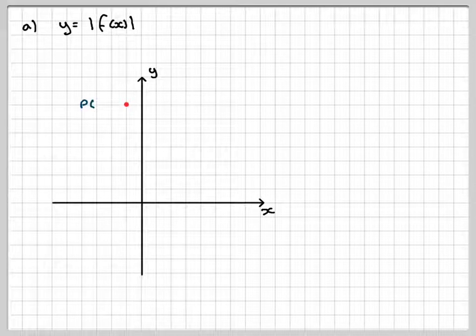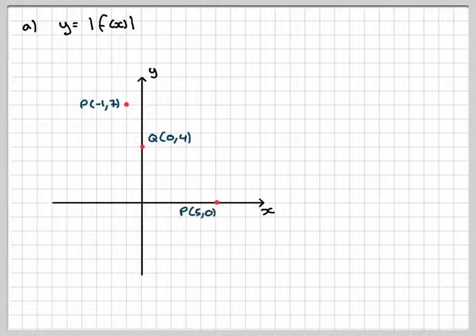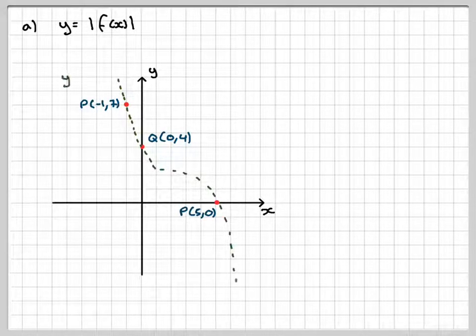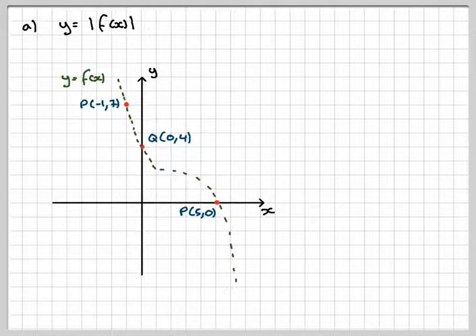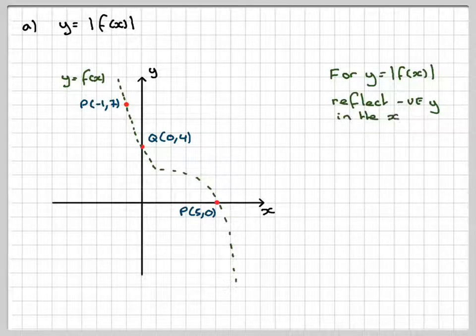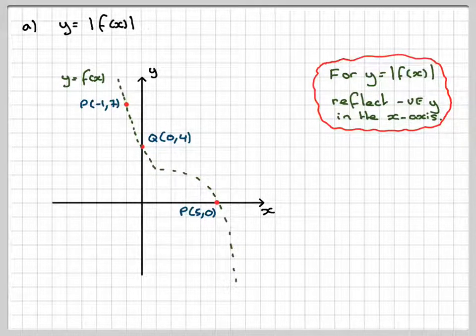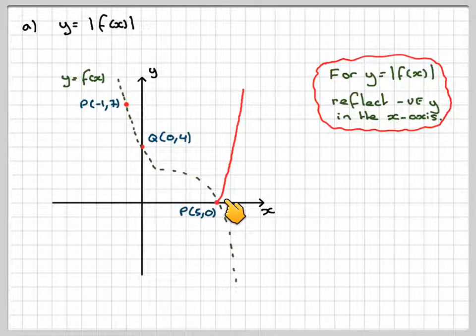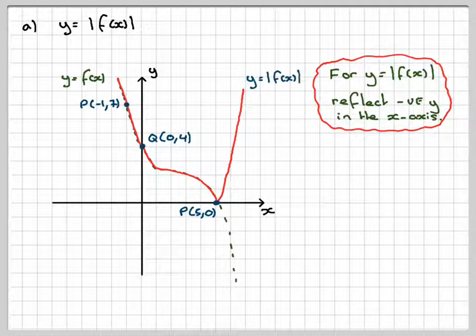For the first one, if we put the graph on, that dotted line there is the original function. If I need to do the absolute value of f of x, then anything that's below the x-axis gets reflected in the x-axis. So for y equals the absolute value of f of x, you reflect negative y in the x-axis. This bit here will look like this, and then this will be the same. Therefore, this is the function y equals the absolute value of f of x.